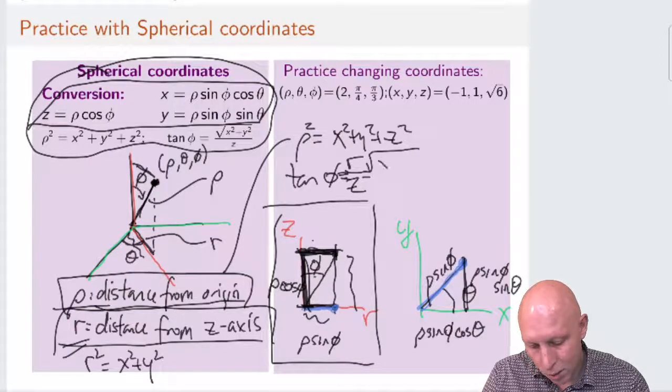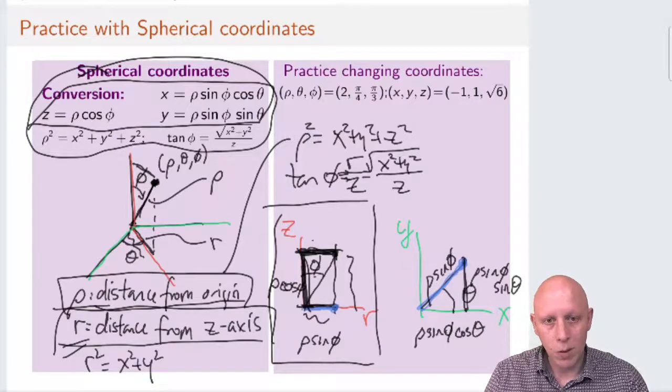So we can write that as square root of x squared plus y squared all over z. That's where that equation comes from.